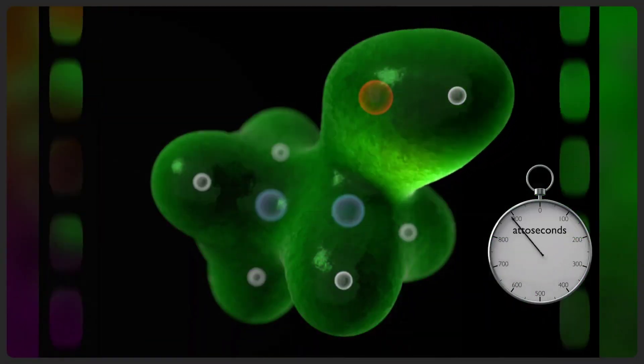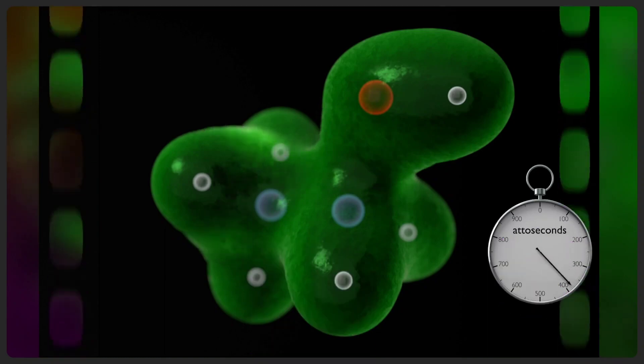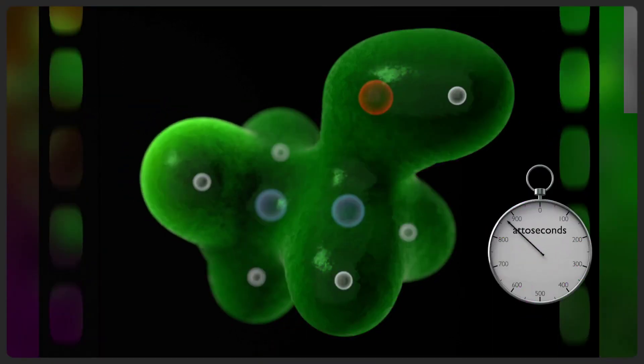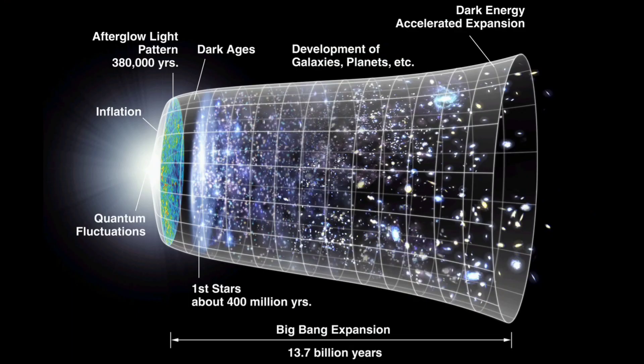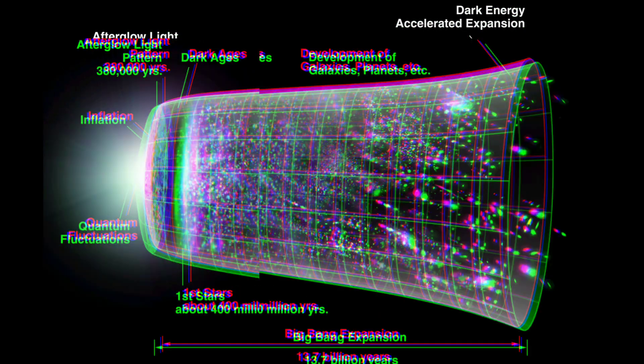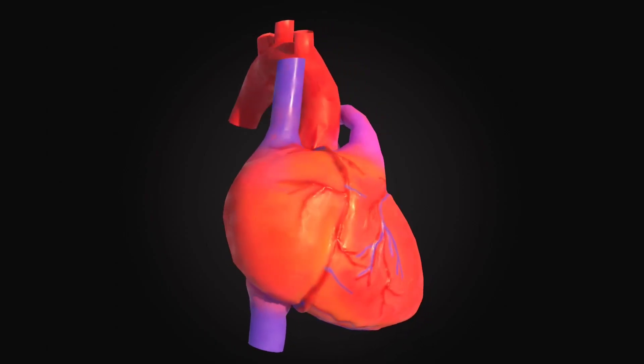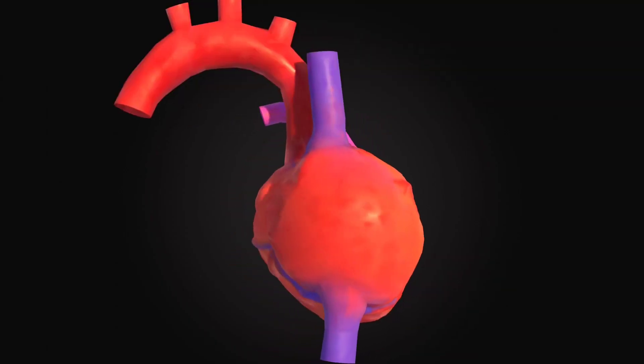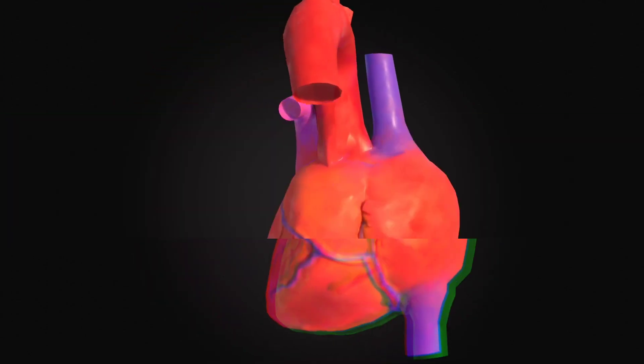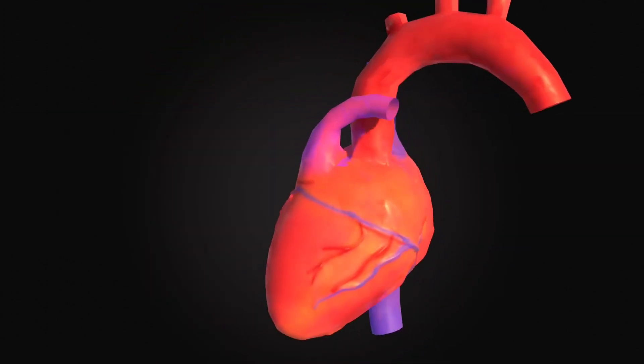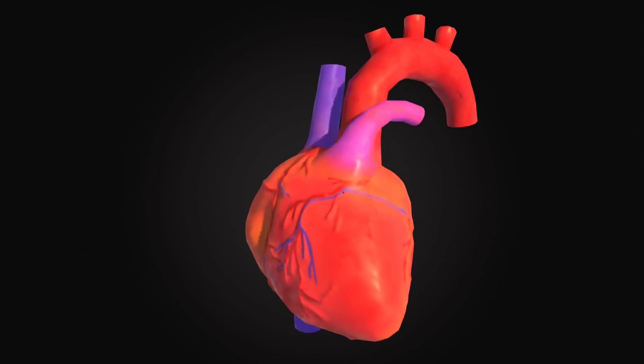Atoms' natural time scale is incredibly short, with atoms moving in femtoseconds. The age of the universe is estimated to be 13.8 billion years old. This is the amount of time that has passed since the Big Bang, which is thought to be the beginning of the universe. The age of a heartbeat is approximately one second. This is the amount of time it takes for a human heart to beat once.